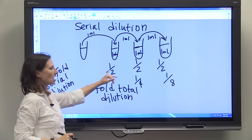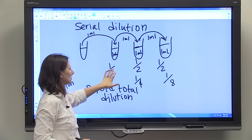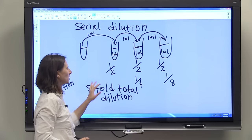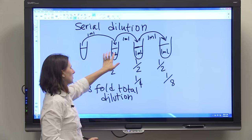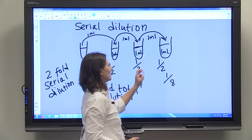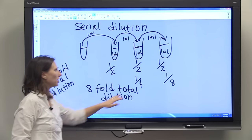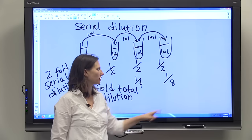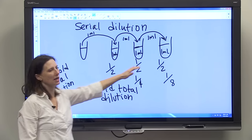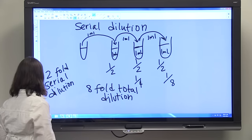Because each time the stock solution is being diluted, well the first time the stock solution is being diluted two-fold, the second time this first dilution is being diluted two-fold, the third time the second solution is being diluted two-fold. So overall in your last test tube you have an eight-fold dilution, but each time you're just doing a two-fold dilution. So that's why it's called a two-fold serial dilution.